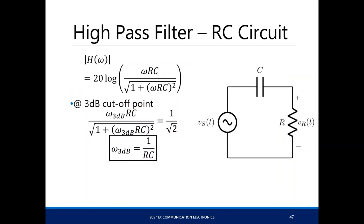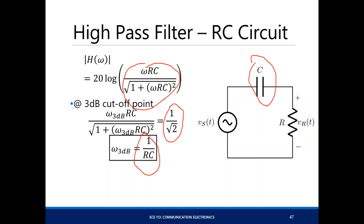For a high-pass filter, you change the inductor to a capacitor. Again, the resistor is modeled as the load resistance and can't be changed. The 3 dB point occurs when the magnitude equals 1/√2, giving a 3 dB frequency of 1 divided by RC.